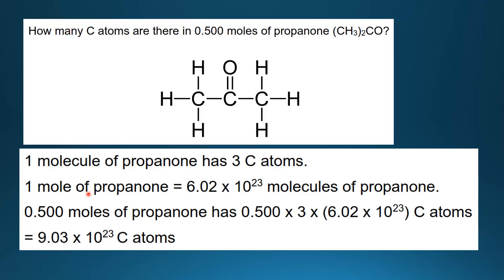One mole of propanone is equal to Avogadro's constant molecules of propanone. So 0.500 moles of propanone has — and this is the calculation — 0.500 times three, because there are three carbon atoms in a molecule, and then we multiply by Avogadro's constant to get 9.03 times 10 to the 23 carbon atoms in 0.500 moles of propanone.